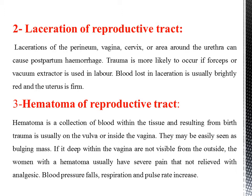Hematoma: A reproductive tract hematoma is a collection of blood within the tissue and results from birth trauma. It is usually on the vulva or inside the vagina. It may be easily seen as a bulging mass; if deep within the vagina, it is not visible from the outside. The woman with a hematoma usually has severe pain not relieved with analgesics. Blood pressure, respiration, and pulse rate increase.